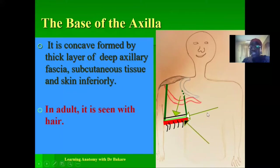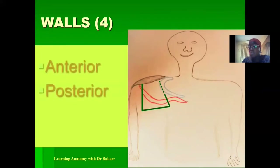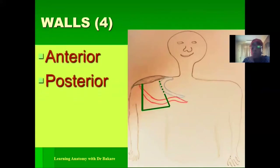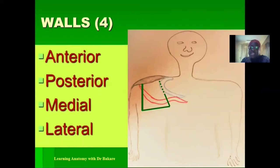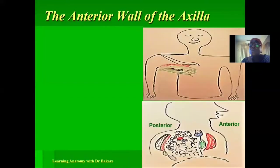The axilla has four walls: the anterior wall, the posterior wall, the medial wall, and the lateral wall. The anterior wall is in the anterior view, and the posterior wall is behind. Let's look at each wall and what they present.